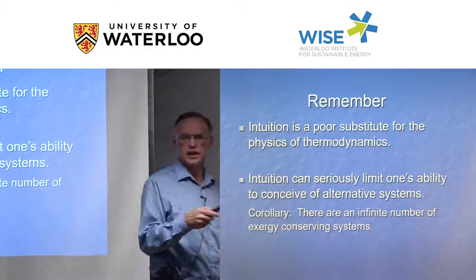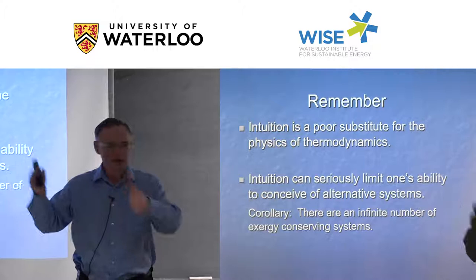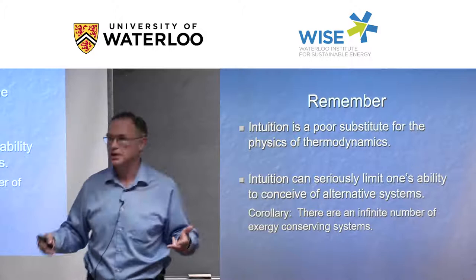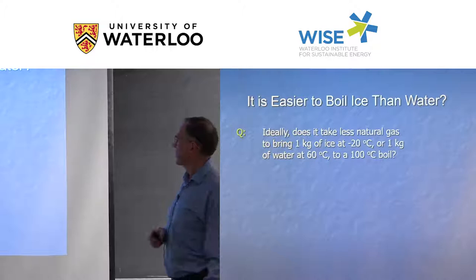Ecosystems evolve differently, but they could all have similar characteristics and be similarly strong, resilient, and efficient. There's no single unique optimal solution — multiple systems can achieve similarly high performance.